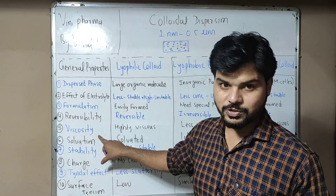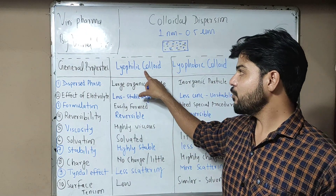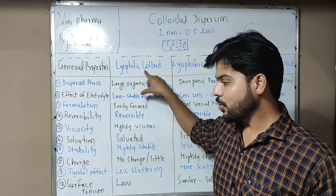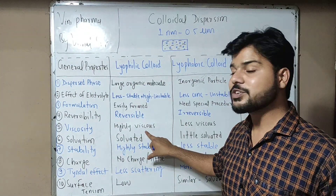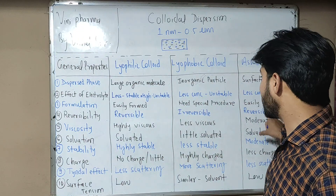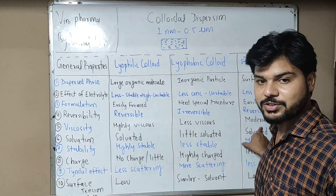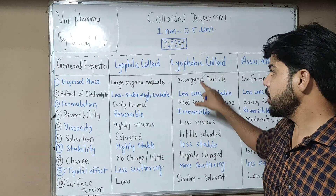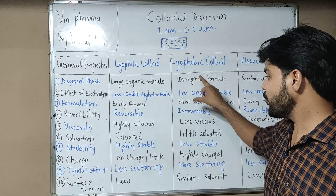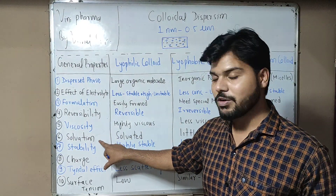If we talk about viscosity: lyophilic colloids are basically polymer-based colloids and are the most highly viscous. Association colloids are moderately viscous, and lyophobic colloids are less viscous.